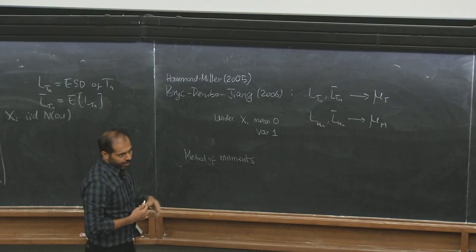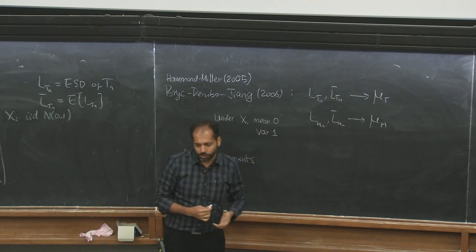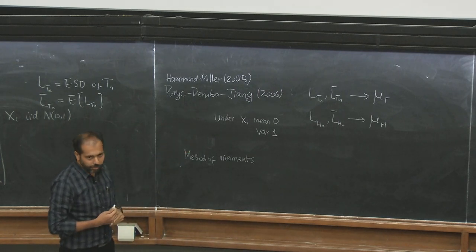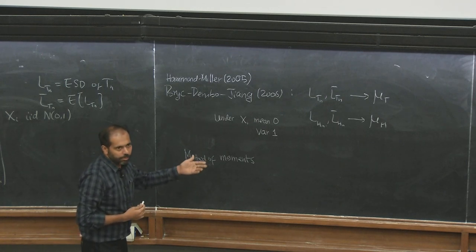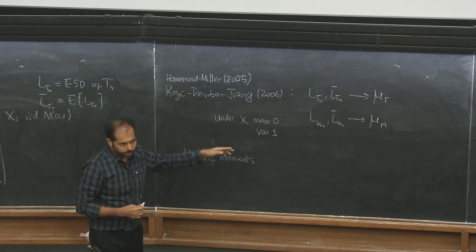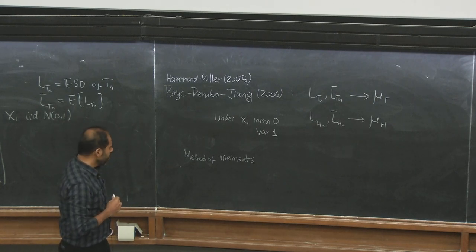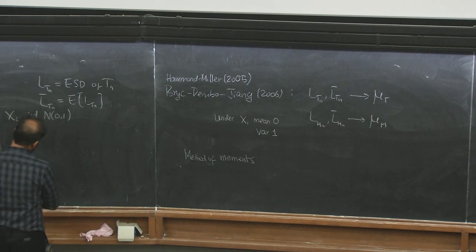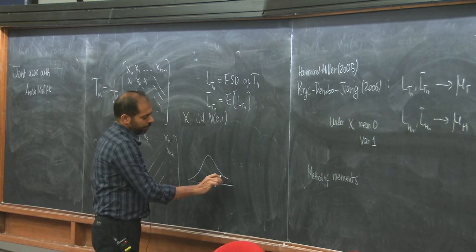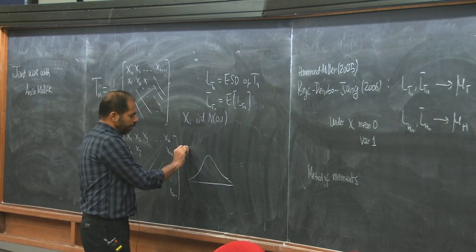The moments are highly inexplicit and complicated. Moments are good to get certain properties — for instance, they uniquely determine the measure, and one can say something about the tails. In particular, both mu_T and mu_H have unbounded support. But if you draw a picture — it's simple to do a simulation — you can see what mu_T looks like by drawing a random Toeplitz matrix, taking its eigenvalues, and drawing the histogram. mu_T looks unimodal, and mu_H looks bimodal.